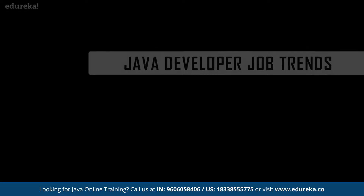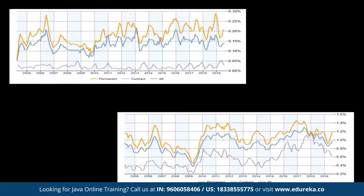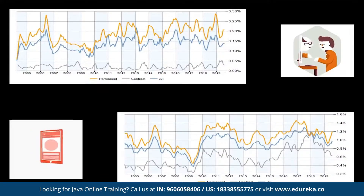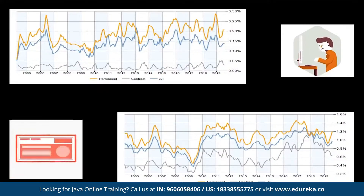Now let us move on to our next topic where we shall discuss about the Java developer job trends. The job trends according to the years and level of expertise can be divided into two segments: the junior Java developer and the senior one. Looking at the junior Java developer stats, there is an acceptable growth found in the recent years for junior Java developers with around zero to two years of experience with relevant frameworks.